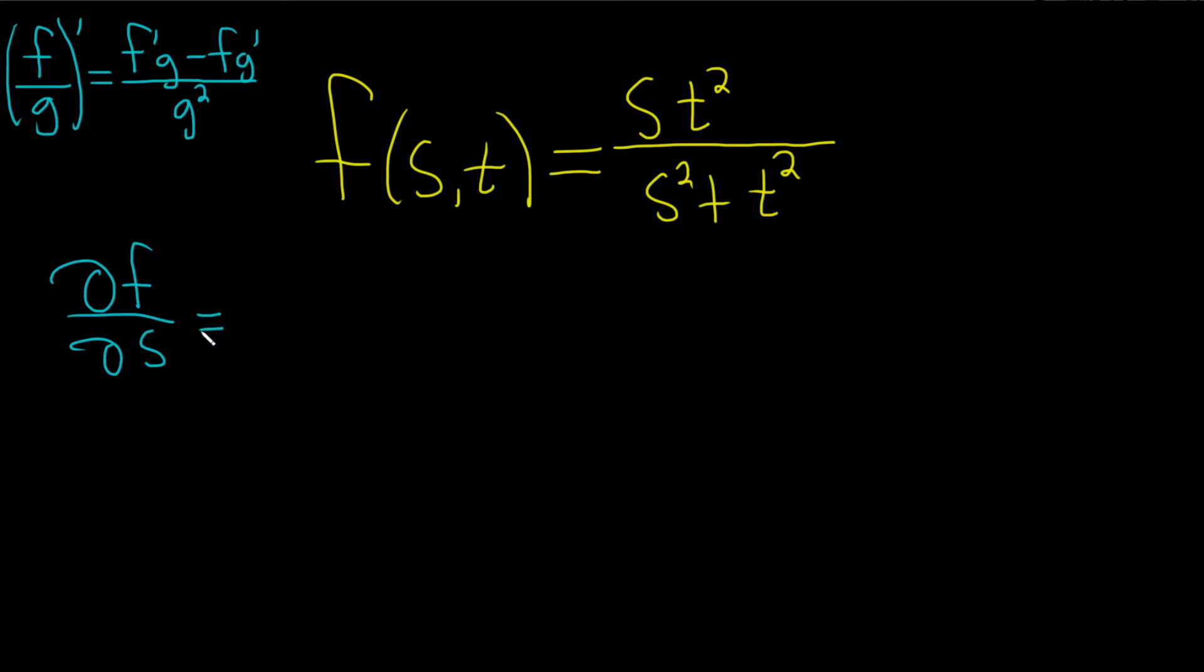Here this is our top function and we're taking the partial with respect to s, so that means all of the t's are constants. When we take the derivative of the top, the derivative of s is one, so we're just left with t squared.